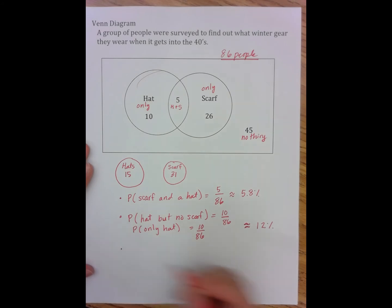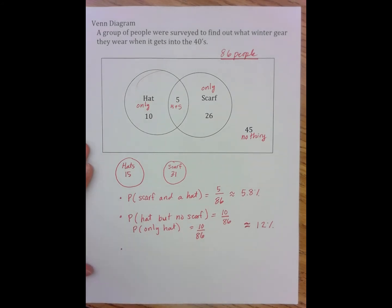Let's look at one more. Let's talk about the probability that a person is wearing a hat given that they're wearing a scarf. And we use this notation.